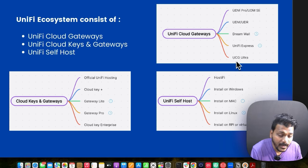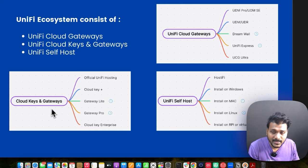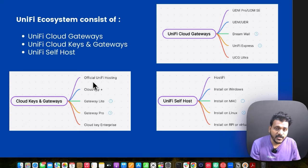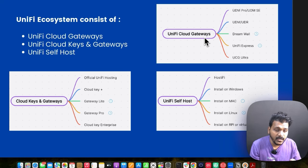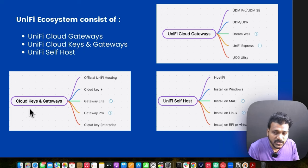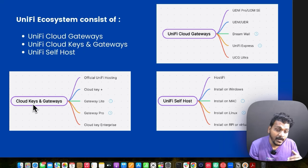Now let's check the Cloud Keys and Gateways. There is a difference: when you say UniFi Cloud Gateways, the hardware consists of UniFi applications on it — you don't need to install any controller software or purchase separate cloud hardware. Cloud Keys and Gateways, on the other hand, are hardware controllers where you can run UniFi applications.